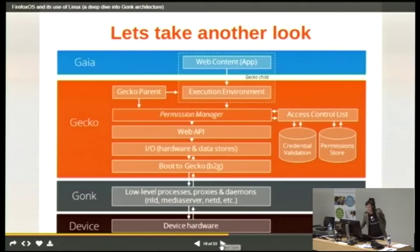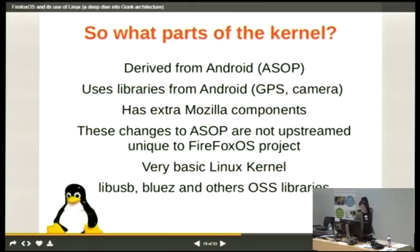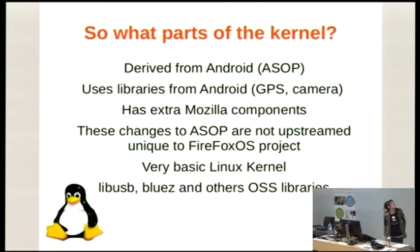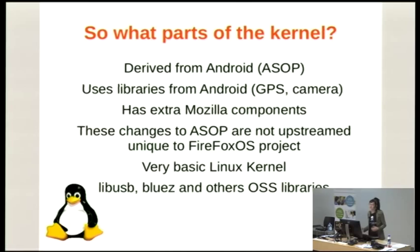What part is the kernel? Basically, it's pretty much an Android kernel. It's using Android libraries — GPS, camera, etc. — but it's also got an extra bunch of Mozilla components in it. These changes are not upstreamed to the Android project; they are unique to the Firefox OS project. It is a very basic Linux kernel, not the full Android, done so to provide a smaller memory footprint, which is really important when you're running low-end $25 to $35 devices.